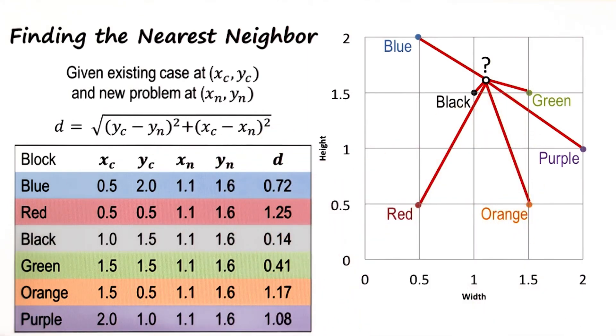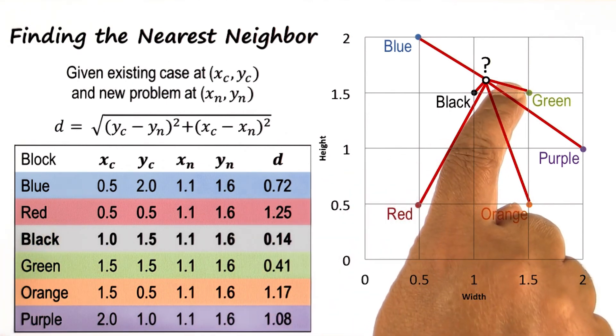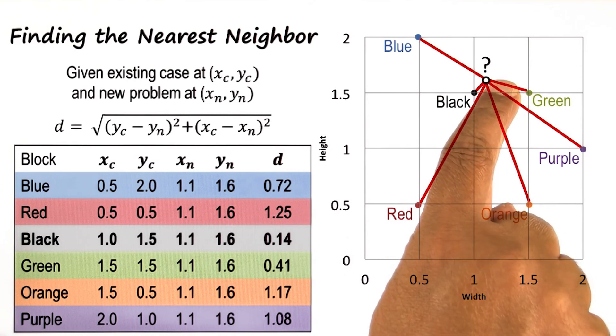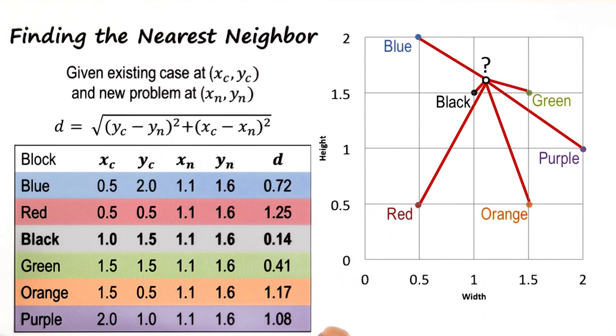Given this table, we can very quickly see that the case of the black block is closest to the new problem, and therefore one might give the answer that the new block is also black in color. So the nearest neighbor method is one method of finding the most similar case or the most closely resembling case.